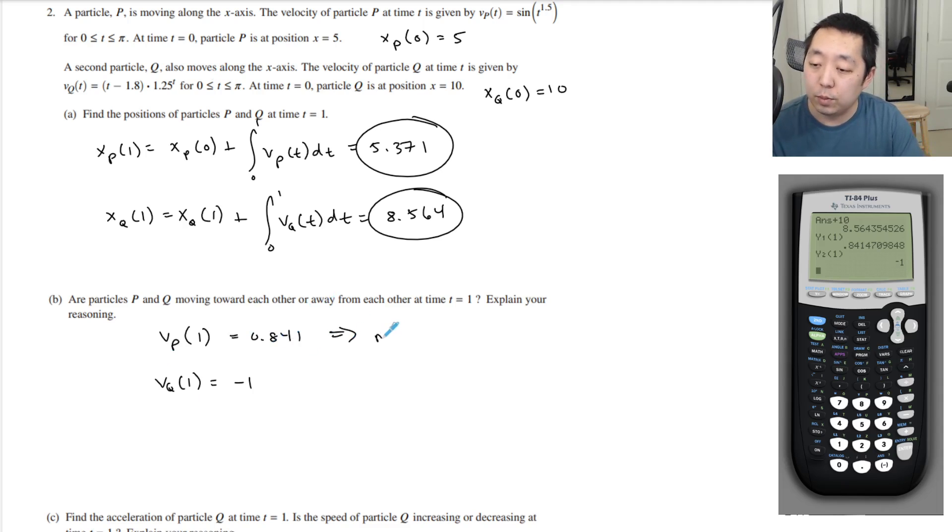So basically, vP is moving right. vQ is negative, so he's moving left. xQ is greater than xP at 1. So Q is on the right.